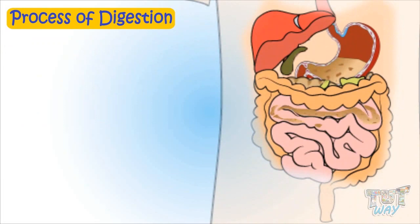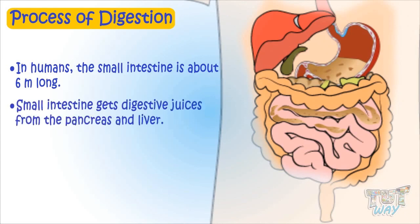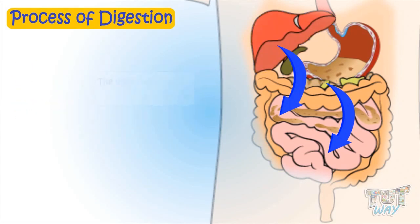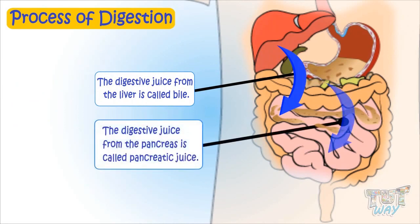In humans, the small intestine is about 6 meters long. The small intestine gets digestive juices from the pancreas and liver. The digestive juice from the liver is called bile, and the digestive juice from the pancreas is called pancreatic juice.